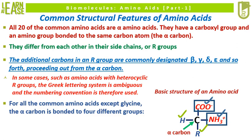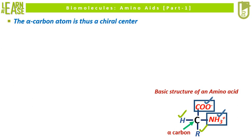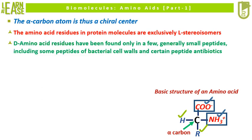For all the common amino acids except glycine, the alpha carbon is bonded to four different groups: 1. carboxyl group, 2. amino group, 3. R group, and 4. hydrogen atom. So the alpha carbon atom is a chiral center. The amino acid residues in protein molecules are exclusively L-stereoisomers. D-amino acid residues have been found only in a few, generally small peptides, including some peptides of bacterial cell walls and certain peptide antibiotics.